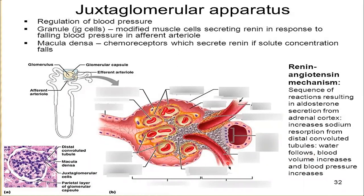Now, the afferent arterioles are smooth muscles. They are close to this renal corpuscle. These are smooth muscles, and they modify some smooth muscles.